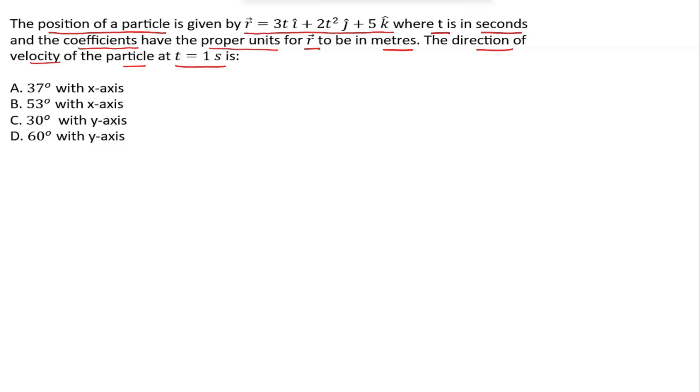Here four options are given. So first we write the given information. In the question, position of the particle is given as r vector equals 3ti cap plus 2t squared j cap plus 5k cap.